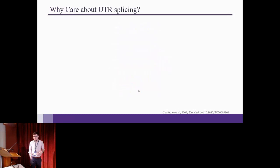Okay, so now I have to ask the question, why should we care about UTR splicing, right? You care about alternative splicing because you can get different gene isoforms. If you get different gene isoforms, you can get different protein products. You get different protein products, and your proteome is much more diverse. So why do we care about UTR splicing?